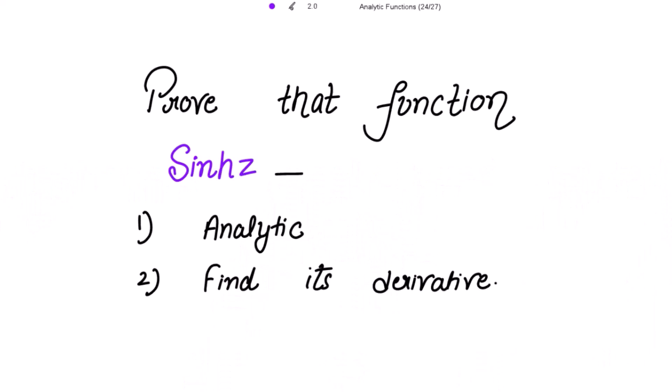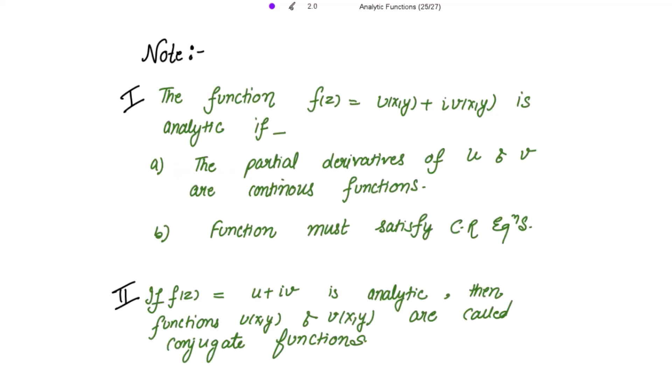We need to prove that the function sine hyperbolic z is analytic and we also have to find its derivative. The function f(z) equal to u(x,y) plus iota v(x,y) is analytic if, first, the partial derivatives of u and v are continuous functions, and second, the function must satisfy the Cauchy-Riemann equations.